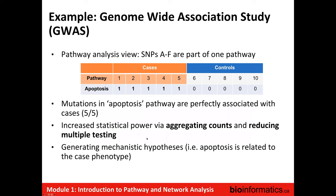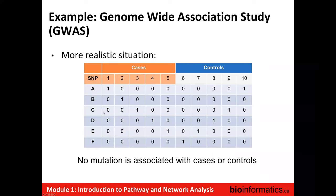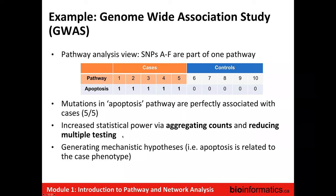Another useful thing gained by converting data to a pathway view is that we now know apoptosis might be related to this disease — we've gained some potential mechanistic understanding, or at least generated a mechanistic hypothesis. For instance, apoptosis relates to the case phenotype in a way we didn't have before. If we would have wanted to find that without pathway analysis, we would have had to take whatever signal we found from the SNPs and look at which genes they might be affecting, and then which pathways those would be affecting. But this automatically gives you this mechanistic hypothesis.